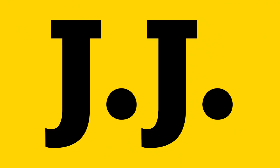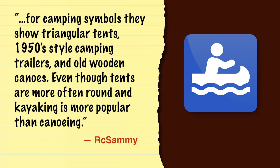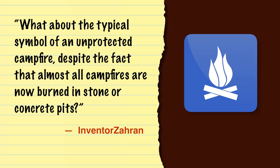One example that immediately grabbed my attention came from my friend R.C. Sammy, who said that for camping symbols they show triangular tents, 1950s-style camping trailers, and old wooden canoes, even though tents are more often round and kayaking is more popular than canoeing. My friend Inventor Zahran added: what about the typical symbol of an unprotected campfire, despite the fact that almost all campfires are now burned in stone or concrete pits?